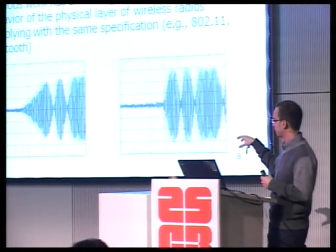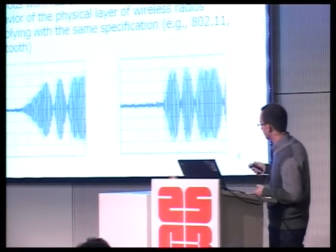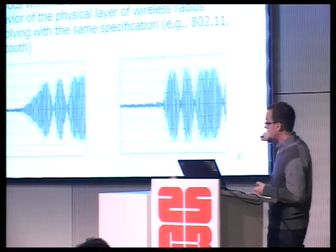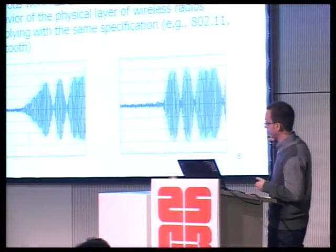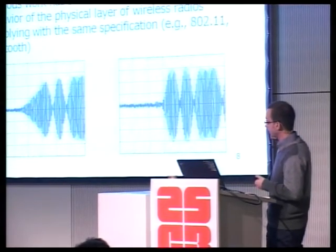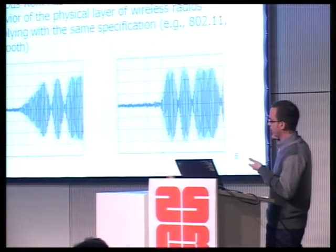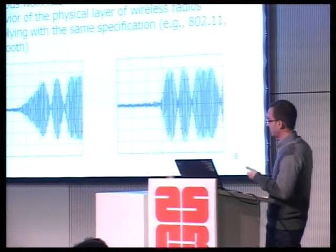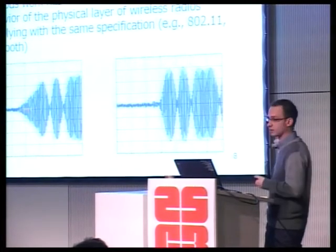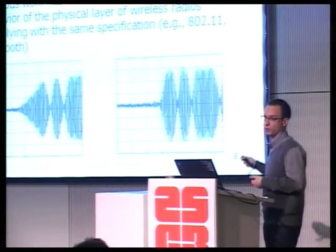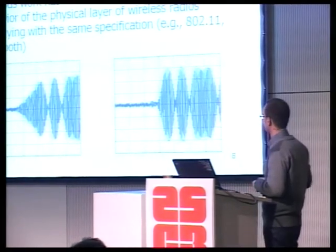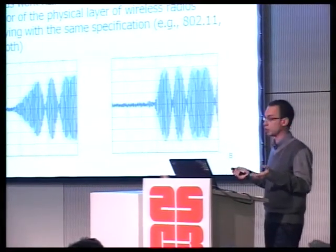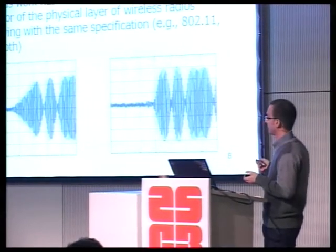The picture shows what happens before the transmission of a packet — just the noise level — and then before each packet transmission there is a ramping-up period defined by the specification. After that ramping period, the power goes up to full power and transmission starts. You can see that the same protocol specification has completely different physical layer signals for these two wireless cards. Previous work showed different manufacturers are easy to distinguish just by observing this physical layer communication.